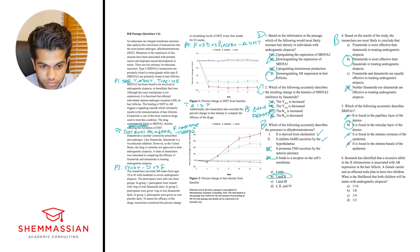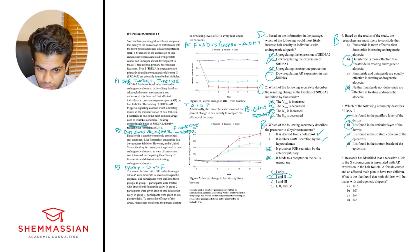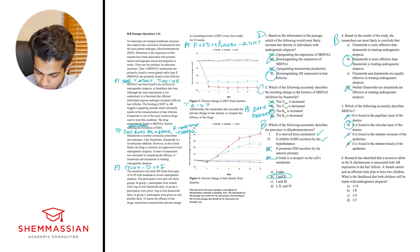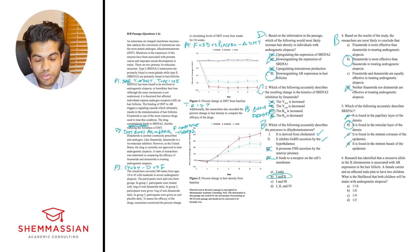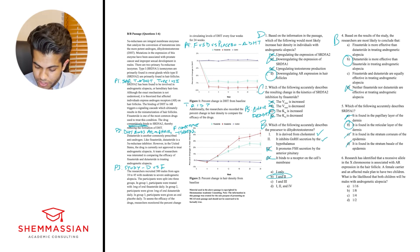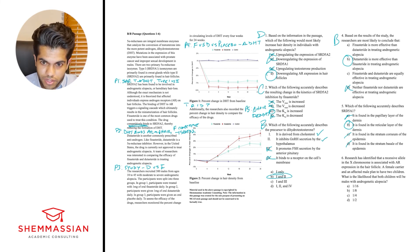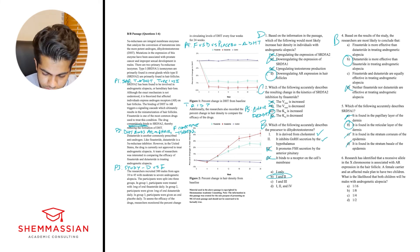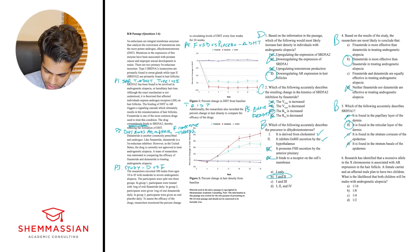This is a tricky question requiring knowledge of the integumentary system, but it shows that content knowledge is very valuable on the MCAT — knowing your content can win you easy points because this doesn't require much passage analysis. If you missed this, make sure you know what's found in each layer: stratum corneum has keratinocytes, stratum basale has stem cells, and sweat glands are in the reticular dermis. B is our best answer, so let's move on to question 6.